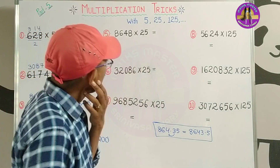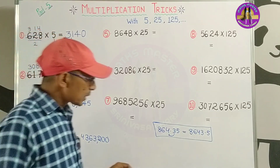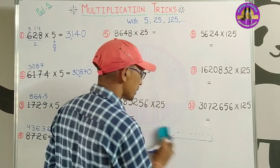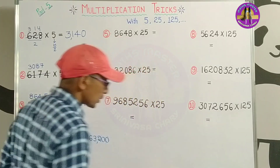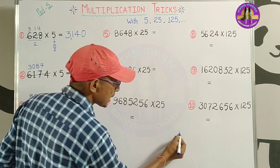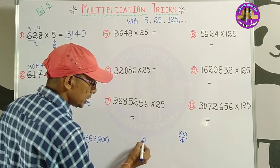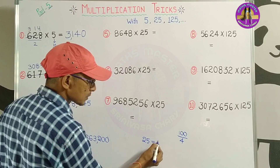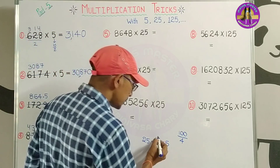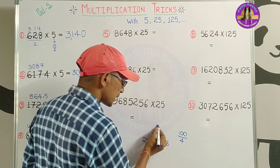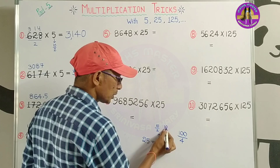So our answer is 5, 3, 2, 0. So our answer comes from doing 10 by 2.